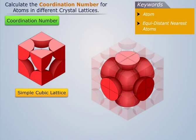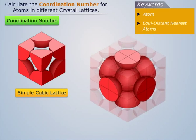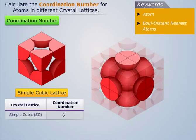And two nearest equidistant neighboring atoms, one above and the other below the plane. Thus the coordination number for every atom in simple cubic lattice is six.